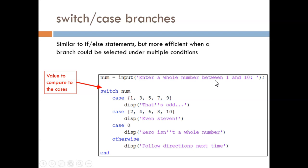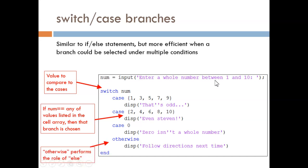If num matches any of the values listed in curly braces after these case statements, then that branch will be chosen. The otherwise command takes the place of else. If a match is not found within the cases, then this last branch is chosen.